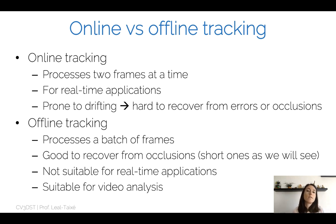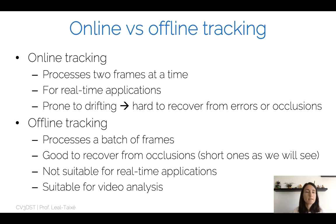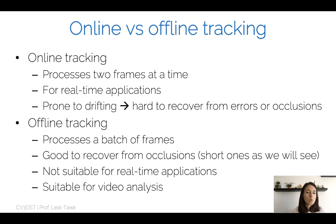In offline tracking, you can process your video in a batch — for example, looking at 10 frames — and decide what the trajectories are in those 10 frames. This is not suitable for real-time applications; it is more for video analysis when you want to analyze a scene that has already happened, for example behavior analysis of how people use entrances and exits. The advantage is that if there is an occlusion in the middle of the batch, you can still see the pedestrian at the beginning and end of the batch and are more likely to recover from short occlusions.